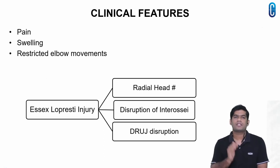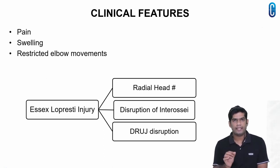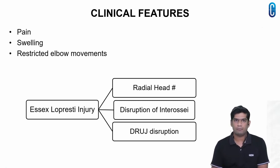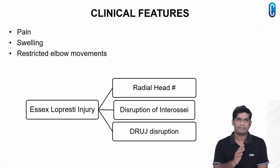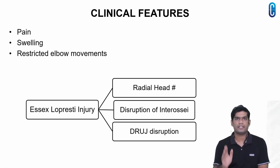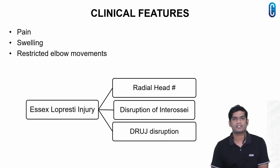Coming to the clinical features, there could be pain, swelling, and restricted movements of the elbow. Always rule out Essex-Lopresti injury, which is a combination of radial head fracture, disruption of the interosseous membrane, and distal radioulnar joint disruption.